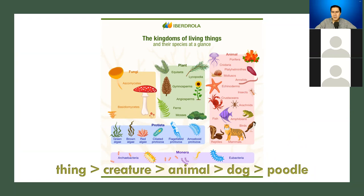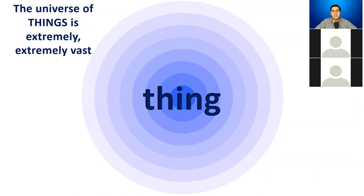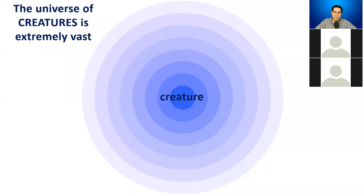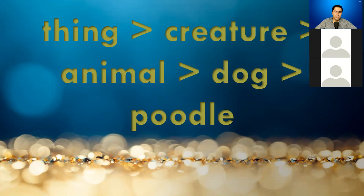Not all creatures are animals. For this analysis, there are other creatures that are not strictly animals. The universe of creatures is extremely vast, but the universe of things is far greater — it includes far more entities than creatures does. Creature is a smaller, less schematic category than thing. Thing is more schematic.